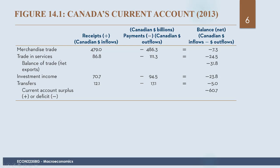When we look at services, we also had a deficit of negative $24.5 billion. So the total balance of trade — our net exports — was negative $31.8 billion, meaning we bought more goods and services from the rest of the world than they bought from us. That is a net outflow.